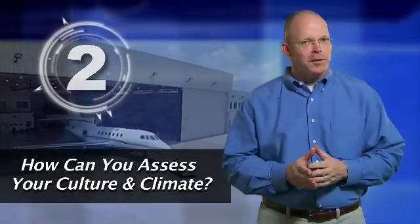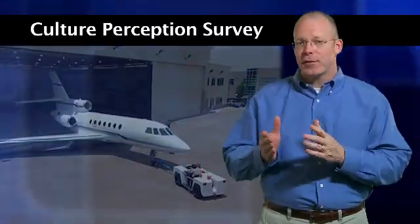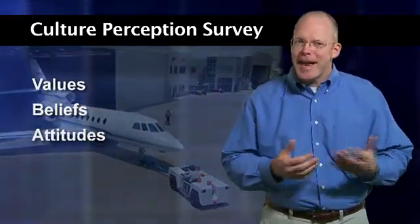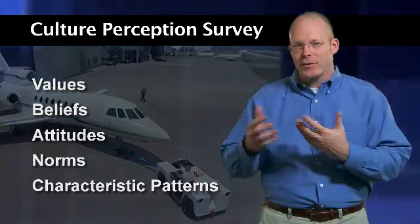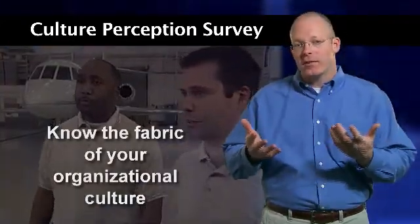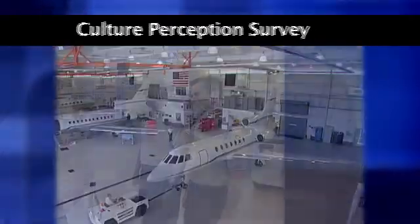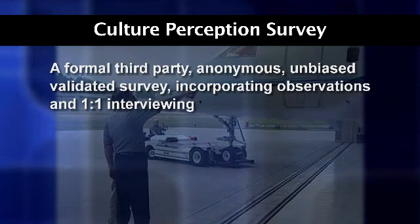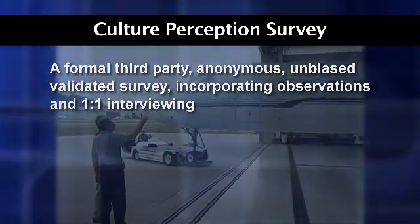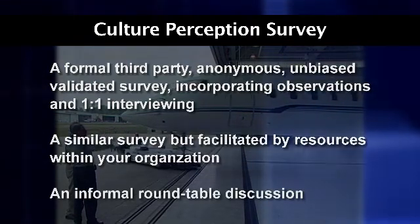It's critical to fully understand where you are in comparison to where you want to be. The next step in the process is to perform a culture perception survey. You'll need to know what values, beliefs, attitudes, norms, and characteristic patterns of behavior are commonly shared — essentially, the fabric of your organizational culture, or how your team members behave when no one is watching. Safety culture perception surveys can be structured as a formal third-party anonymous unbiased validated survey incorporating observations and one-to-one interviewing, a similar survey facilitated by internal resources, or an informal roundtable discussion.